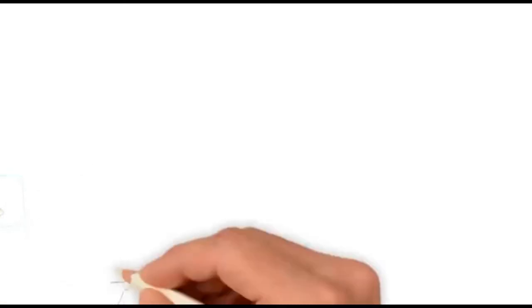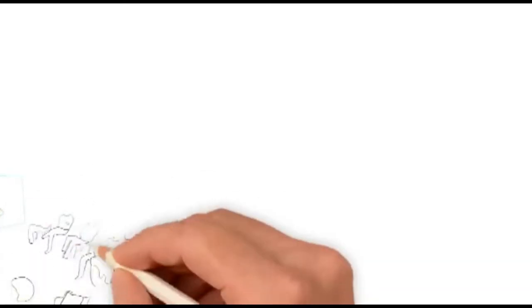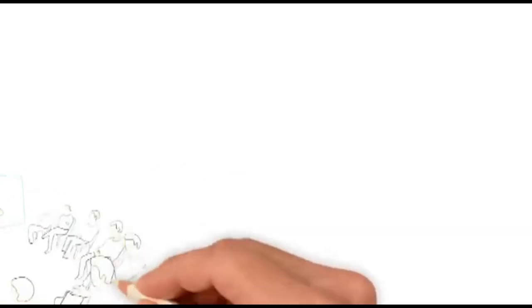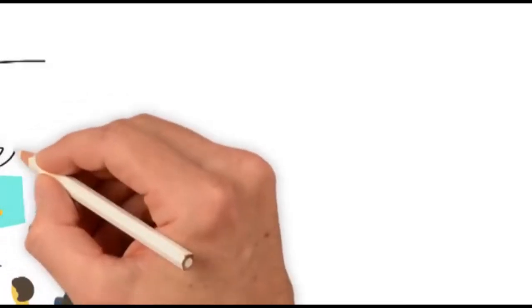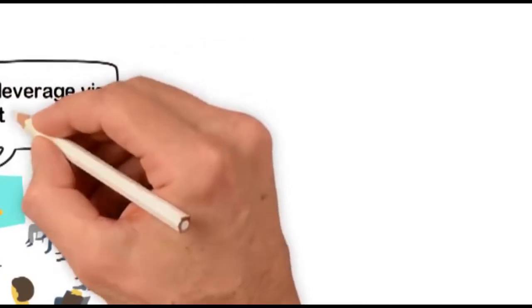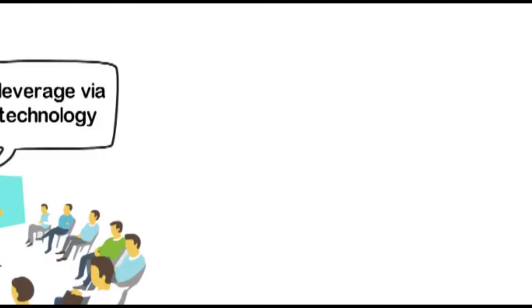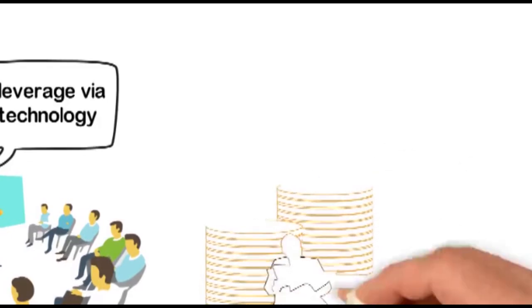Chào các bạn! Hôm nay tôi muốn chia sẻ với các bạn một vấn đề về Bitcoin. Bitcoin là gì và nó hoạt động như thế nào? Mỗi Bitcoin có thể có cơ bản là một tệp máy tính được lưu trữ trong ứng dụng ví kỹ thuật số. Trên điện thoại thông minh hoặc máy tính, mọi người có thể gửi Bitcoin hoặc một phần của một. Đến ví kỹ thuật số của bạn và bạn có thể gửi Bitcoin cho người khác. Mỗi giao dịch được ghi lại trong một danh sách công khai gọi là blockchain.